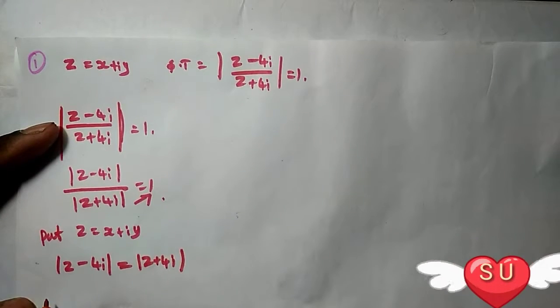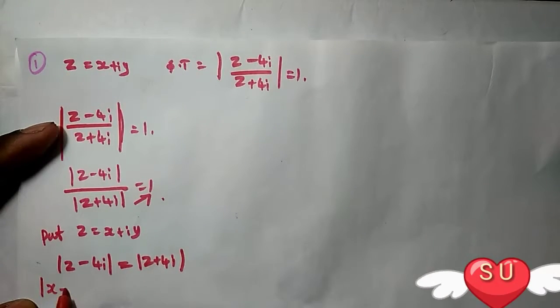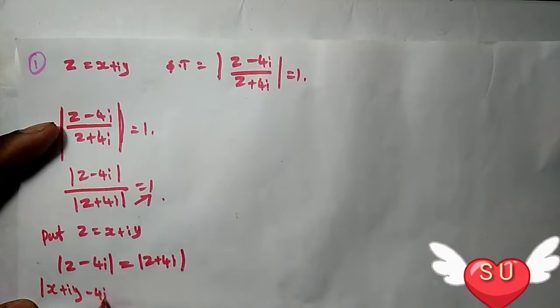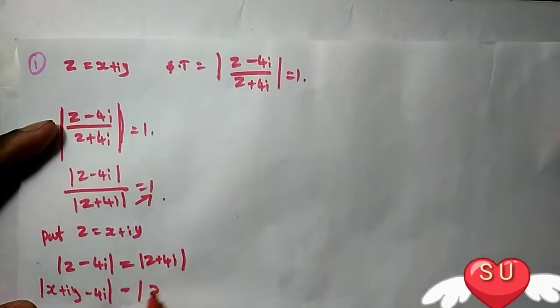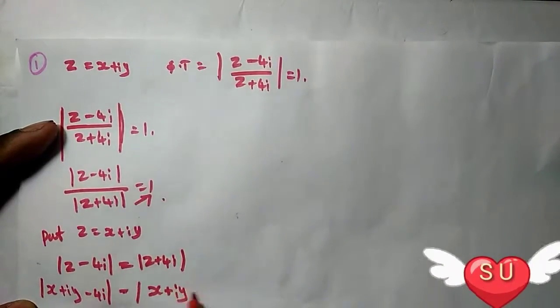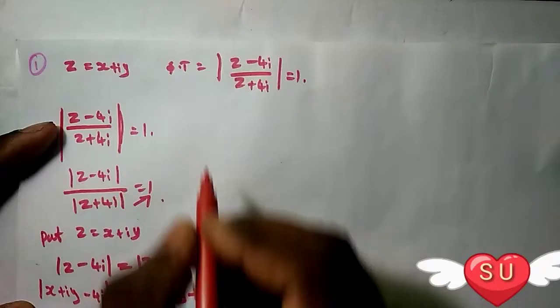Substituting z, we get (x + iy - 4i) equals (x + iy + 4i).